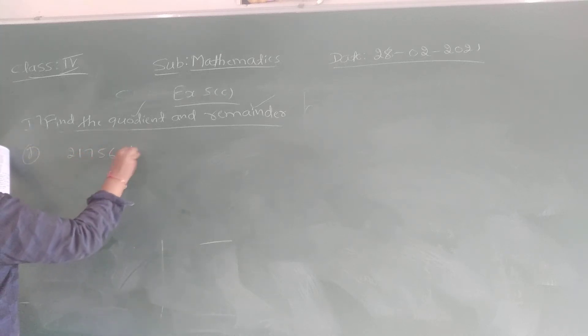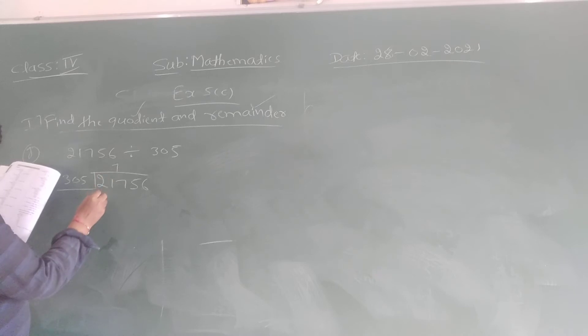2756 divided by 305. So 21756, we have to divide this number by 305. That is 305 sevens up. We are getting 2135.